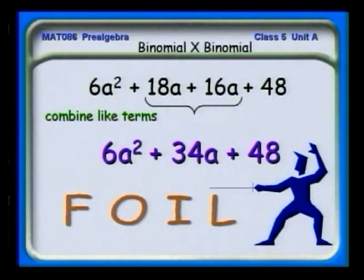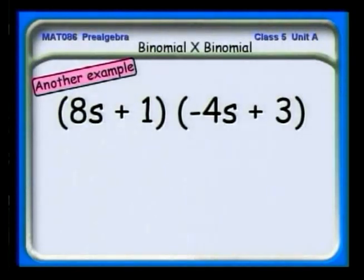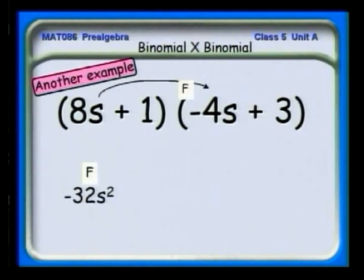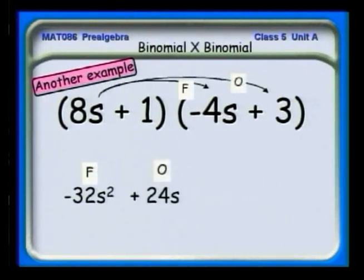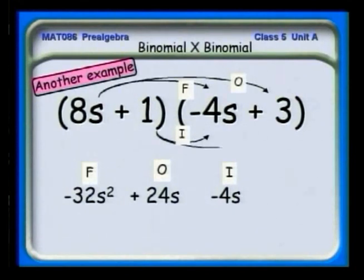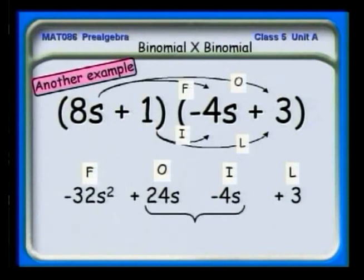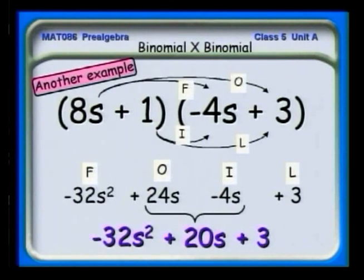FOIL — first, outer, inner, last. Let's try another one. The first gives 8s times (−4s) = −32s squared. The outer gives 8 times 3 = 24s. The inner gives −4s. And the two last terms multiplied together give 3. The two middle terms are like terms, so −32s squared plus 24s minus 4s equals 20s, plus 3.